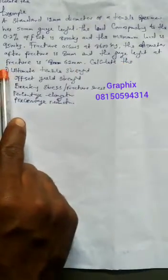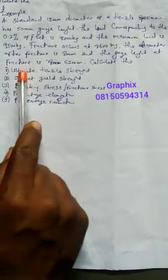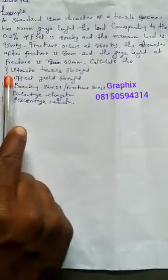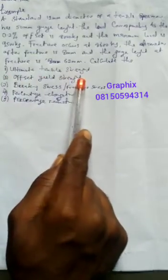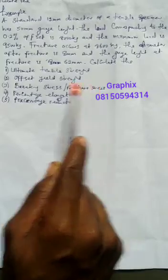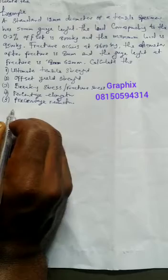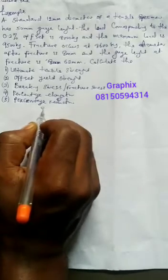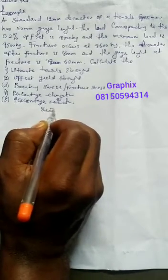The gauge length at fracture is 62 millimeter. Calculate: number one, ultimate tensile strength; b, offset yield strength; three, breaking stress; c, fracture elongation, percentage elongation, and percentage reduction. Now this is what we are going to do — first we write the data or the parameters, then the solution.